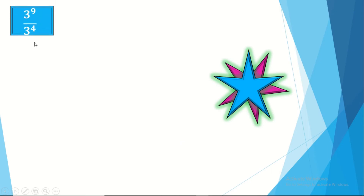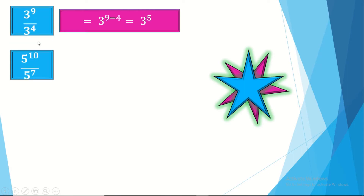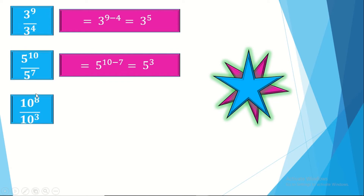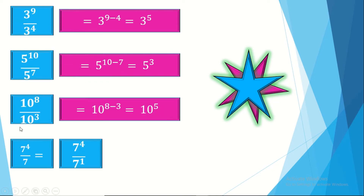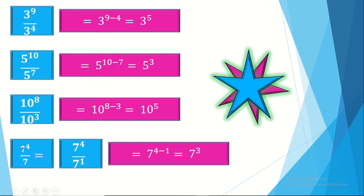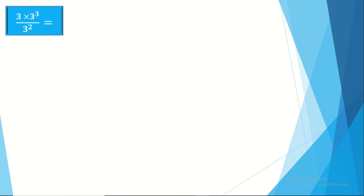We can apply the rule directly. 5 to the power 10 over 5 to the power 7 equals 5 cubed. Also, note that 7 to the power 4 over 7 (which is 7 to the power 1) equals 7 to the power 4 minus 1 equals 7 cubed. Any number without a written exponent has power 1.